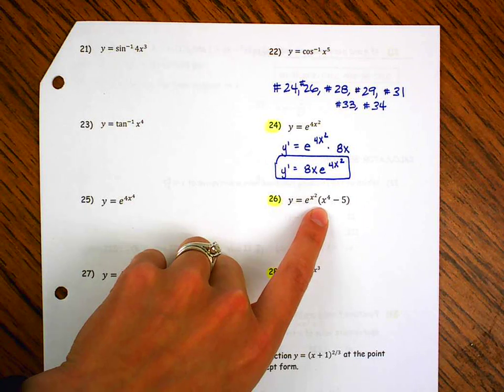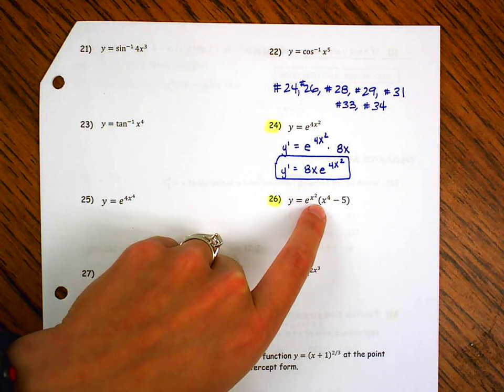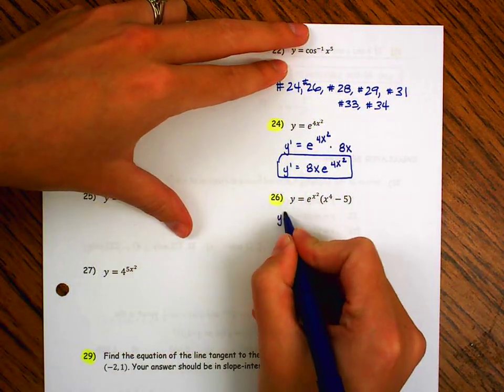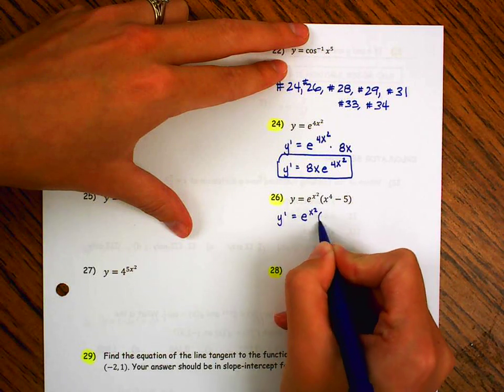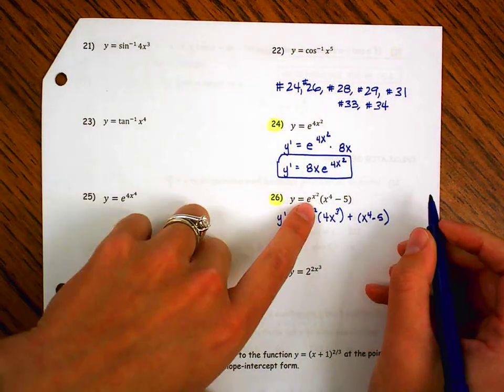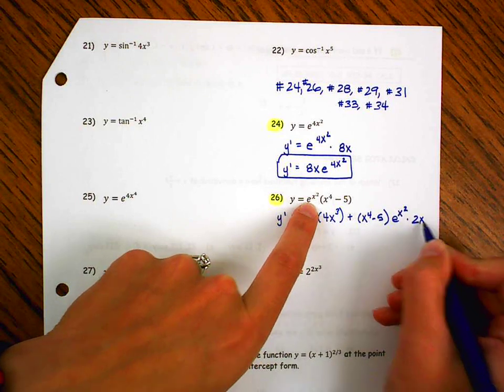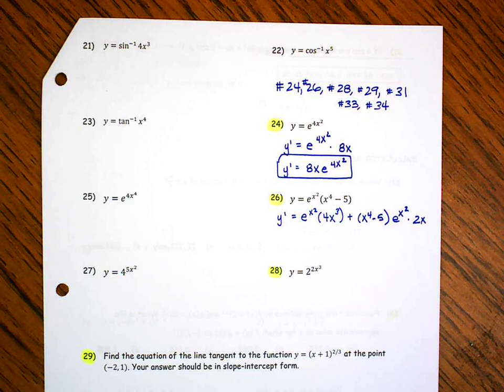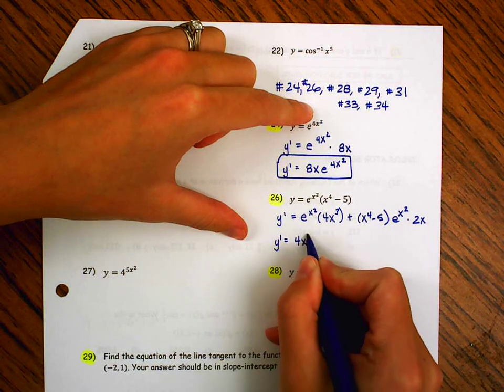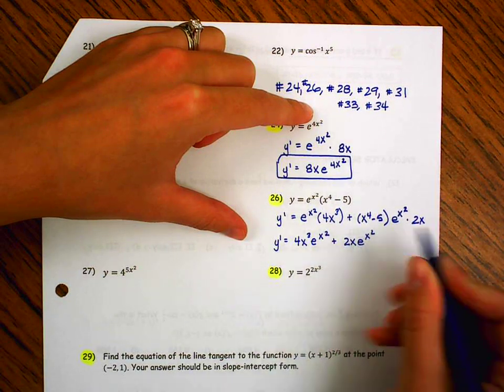Okay, number 26. We could FOIL this out, but that doesn't help us. This is a polynomial, and this is an exponential function. So because there are two different types of functions, the easiest thing to do is just use the product rule. Specifically, I have this piece here multiplied by this piece here. So if I use my product rule, I'm going to have the first times the derivative of the second plus the second times the derivative of the first. So remember, the derivative of the first, I'm going to have e to the stuff. So I need to multiply by the derivative of stuff.